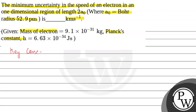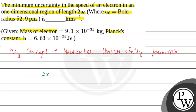We will see the key concept of this question. The given question is based on the Heisenberg Uncertainty Principle. The Heisenberg Uncertainty Principle states that it is impossible to measure the exact position and momentum of an object simultaneously. According to the principle, the product of delta x and delta p is greater than or equal to h over 4π. For the minimum value, delta x times delta p equals h over 4π.